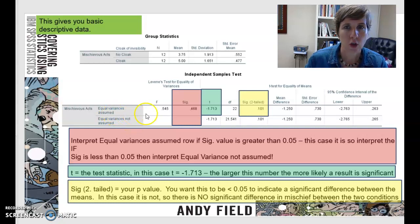So do you interpret the top row of information, or do you interpret the bottom row of information? And what you have to do is look at this first SIG column. If the SIG column is greater than 0.05, it's telling you that there is not a significant difference in how the variances are spread between the two groups, which is a good thing, because now we can interpret equal variances assumed.